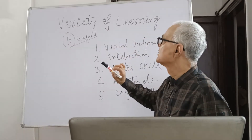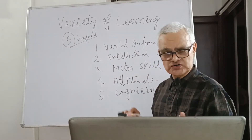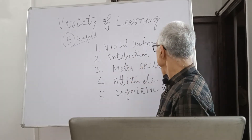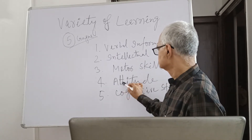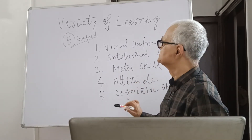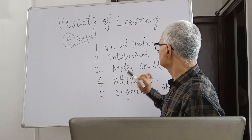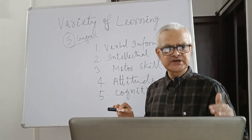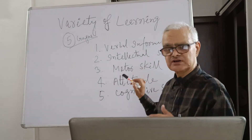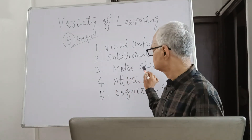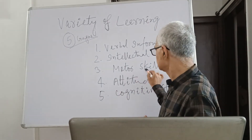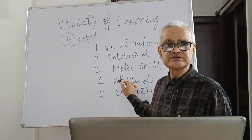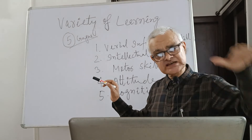As far as variety of learning is concerned, Gagne talks of five varieties of learning: verbal information, intellectual skill, motor skill, attitude, and cognitive strategies. Verbal information means to learn facts and knowledge. Intellectual skill means actual problem-solving or discrimination — learning to distinguish from other things. Motor skill means bodily-kinesthetic, movement or skill aspect, the psychomotor aspect. Attitude means feelings, sentiments, emotions — these are all attitudes.